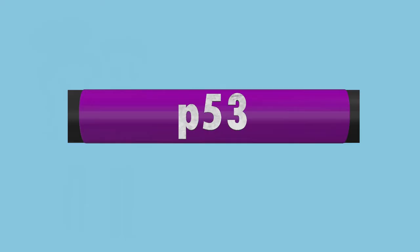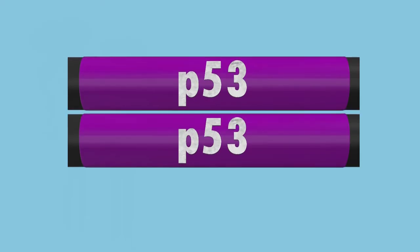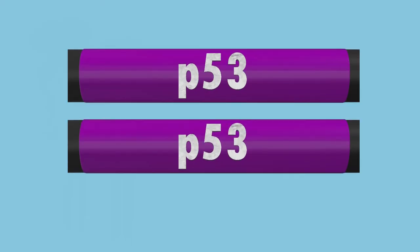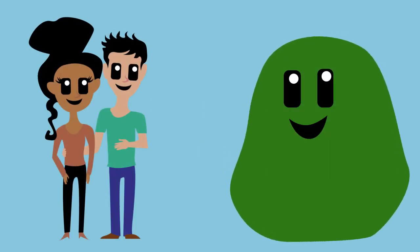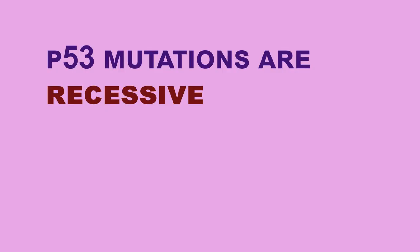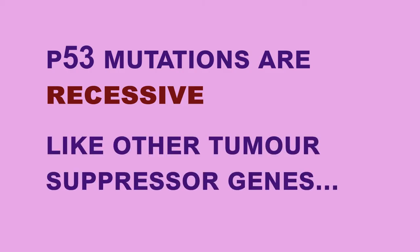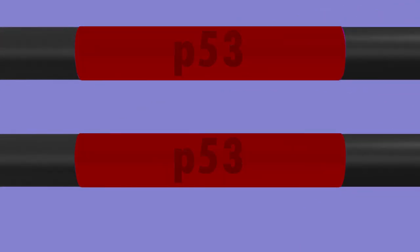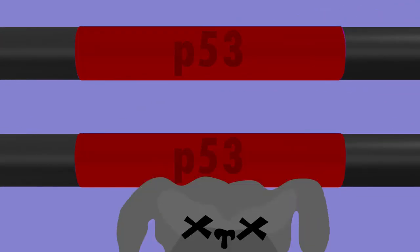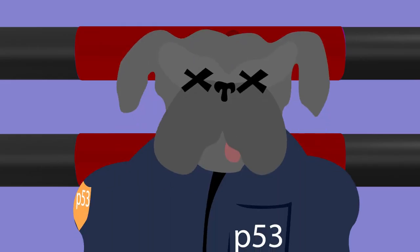Fortunately, we have two copies of this gene in each cell, one from each of our parents. Mutations are recessive, and, like with other tumor suppressor genes, both alleles need to be corrupted to lose normal P53 function.